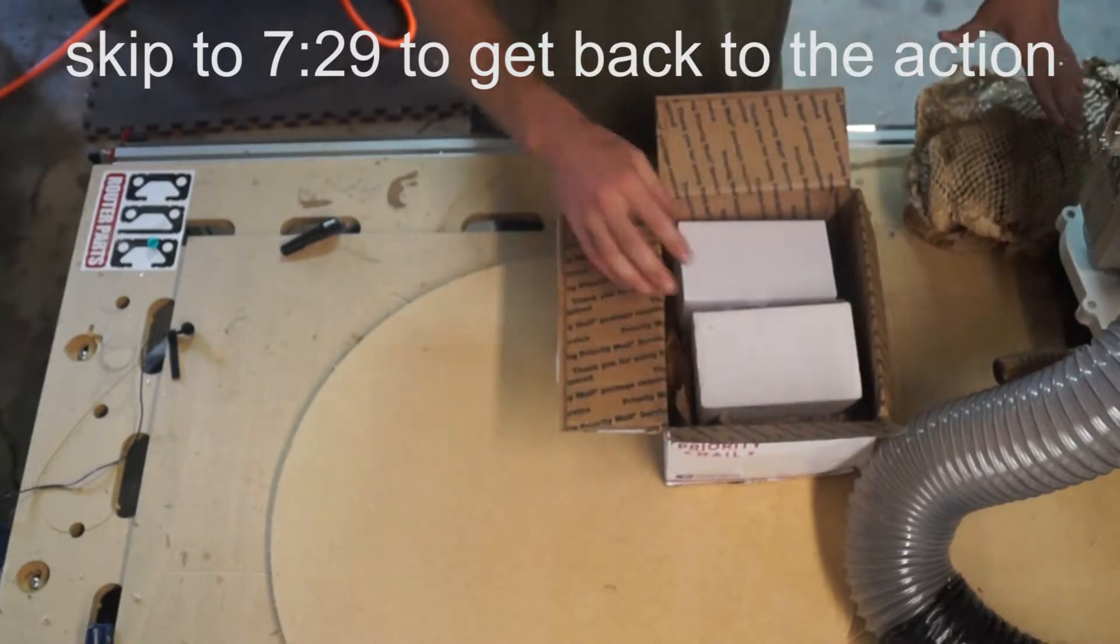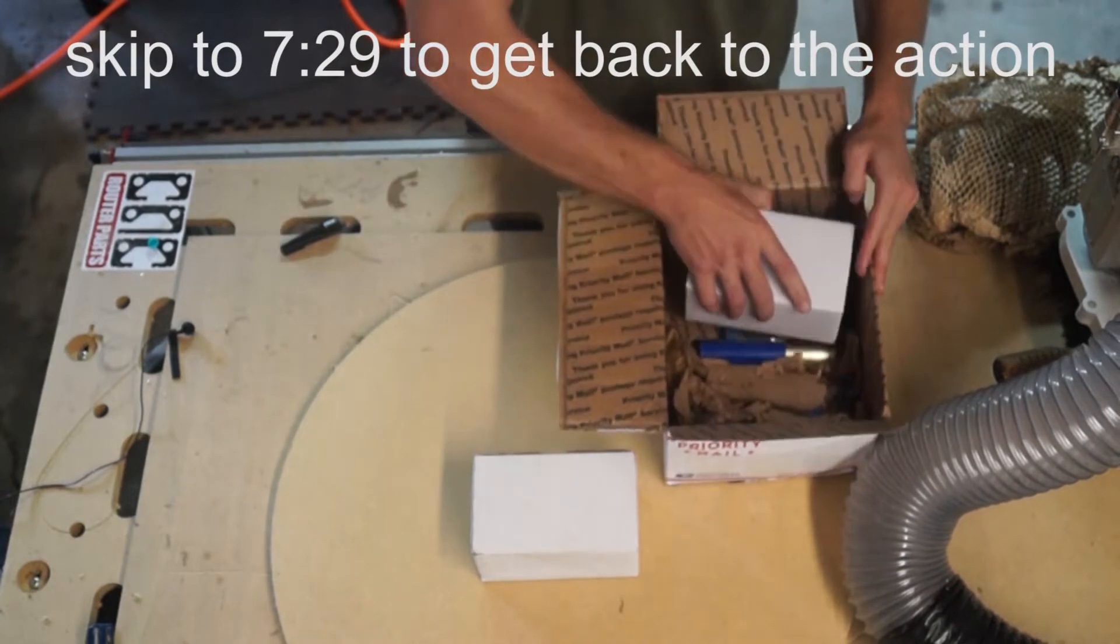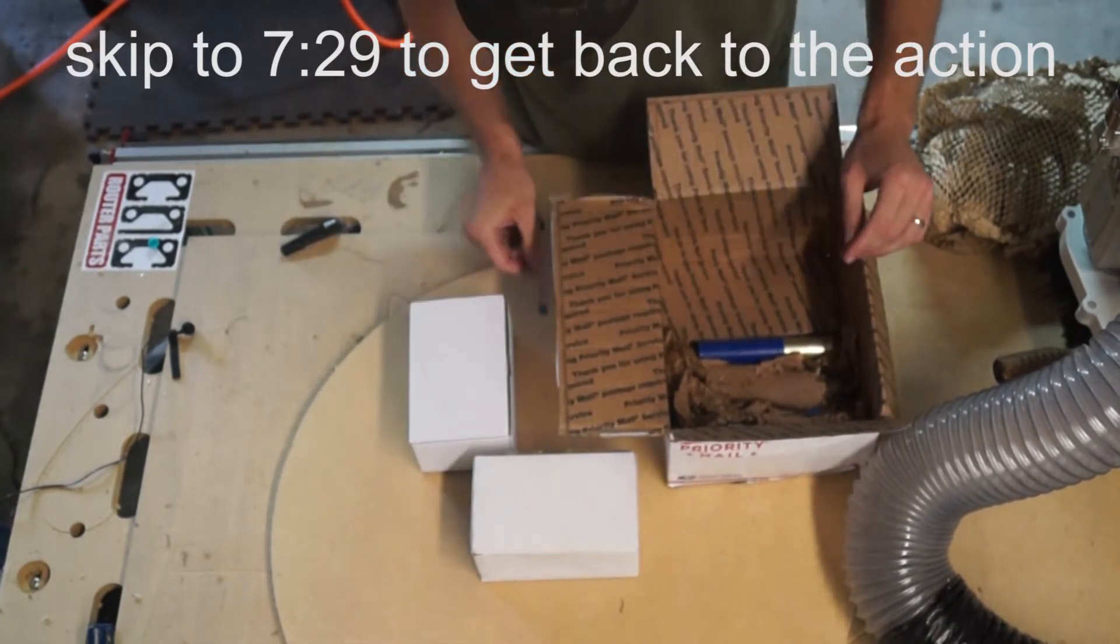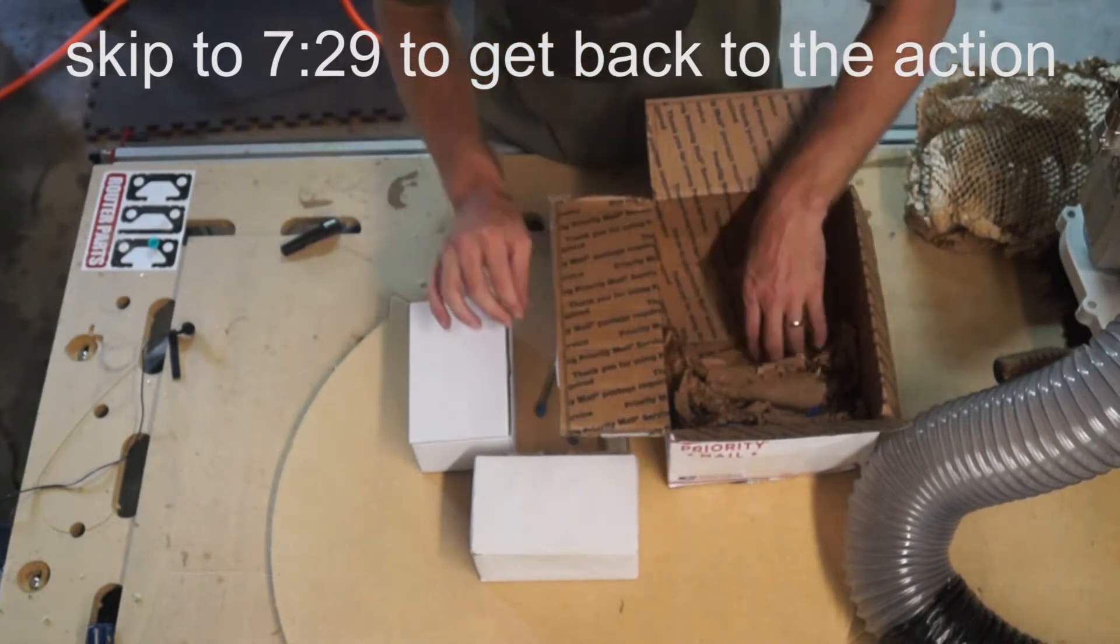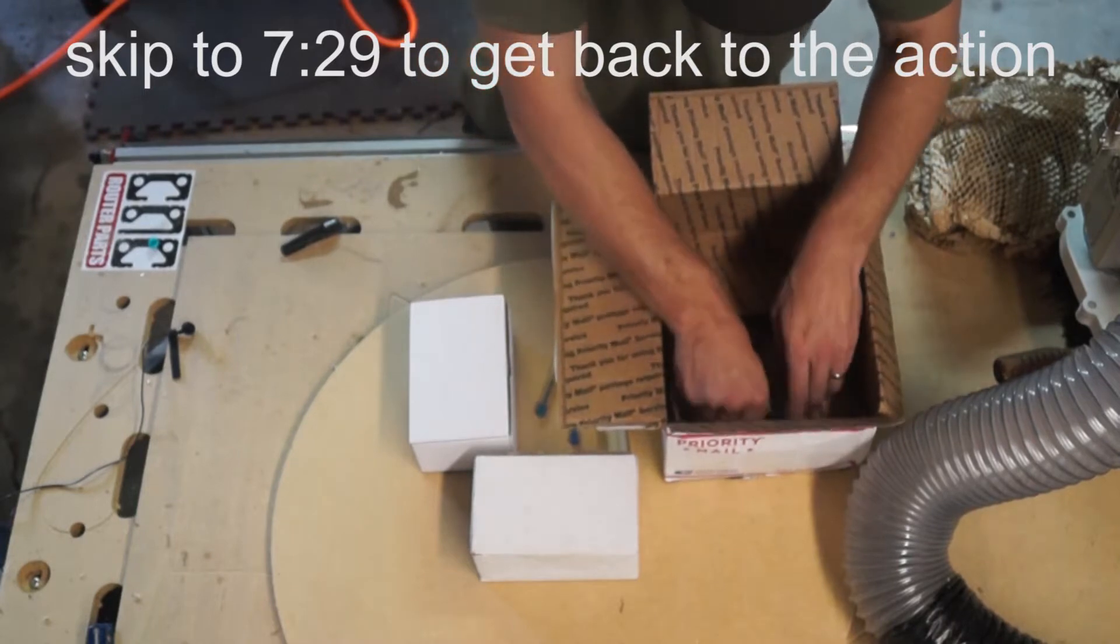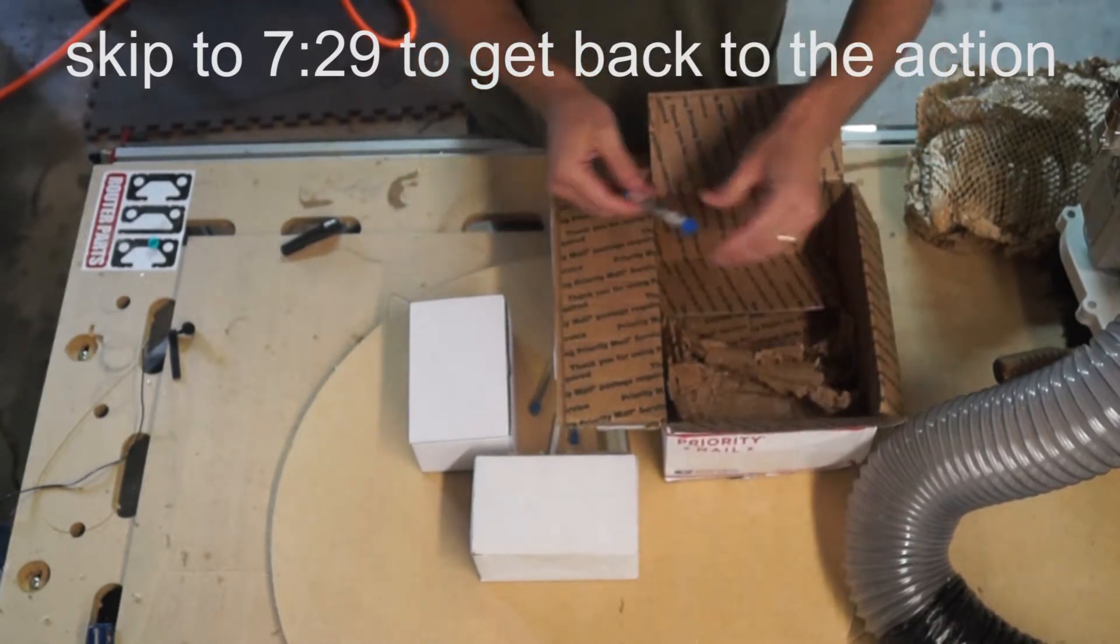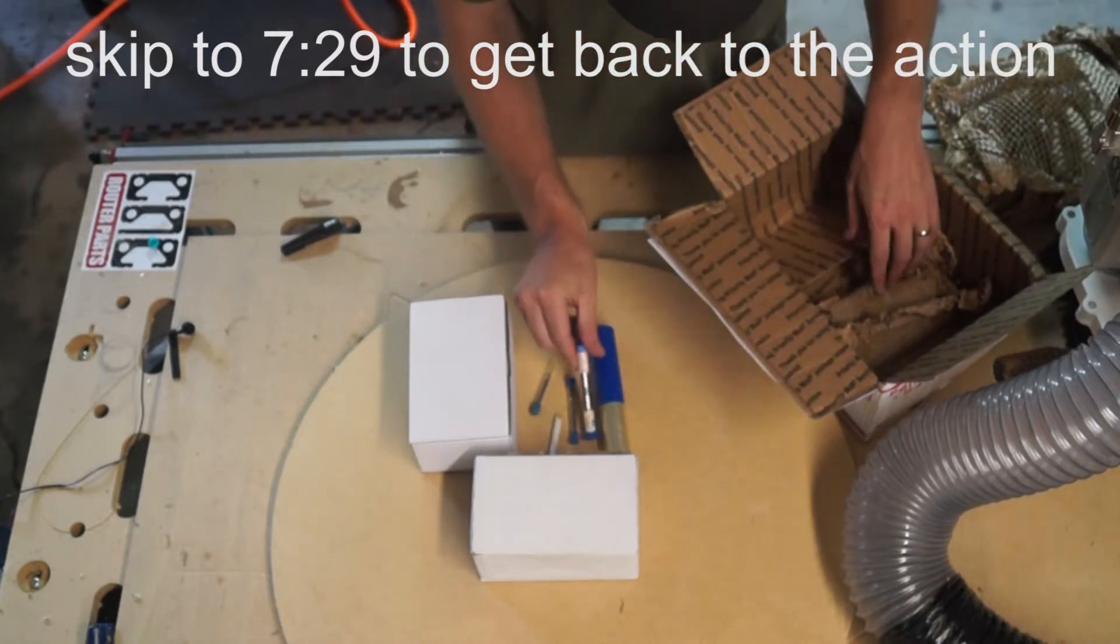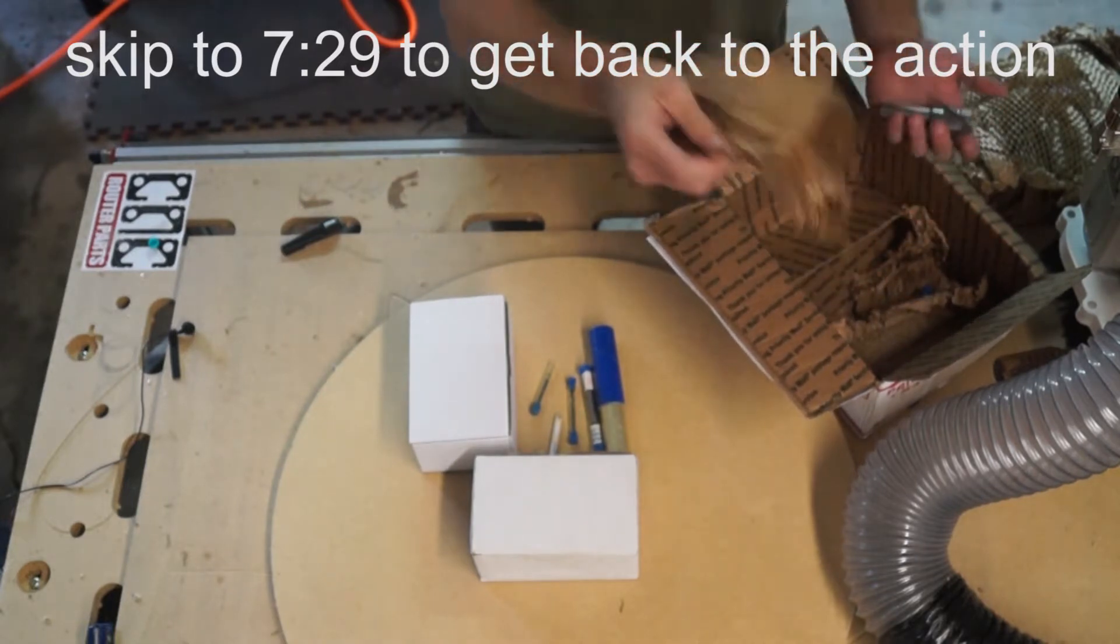We got all kinds of stuff in here. This is a heavy package and it looks like things that are going to be useful to me. Let's dig through all these and see what we got. Maybe we'll get the camera down here closer so that you could actually see what this stuff is once we get into it. It looks like a bunch of end mills, a bunch of tooling.